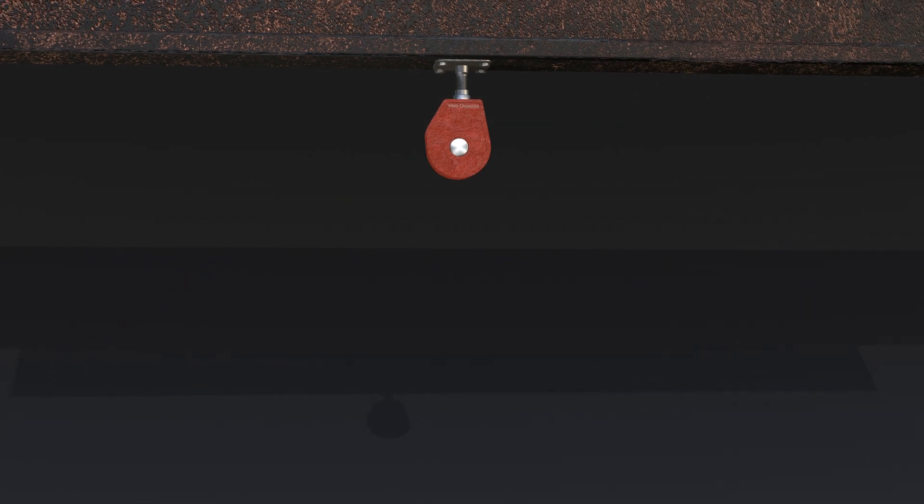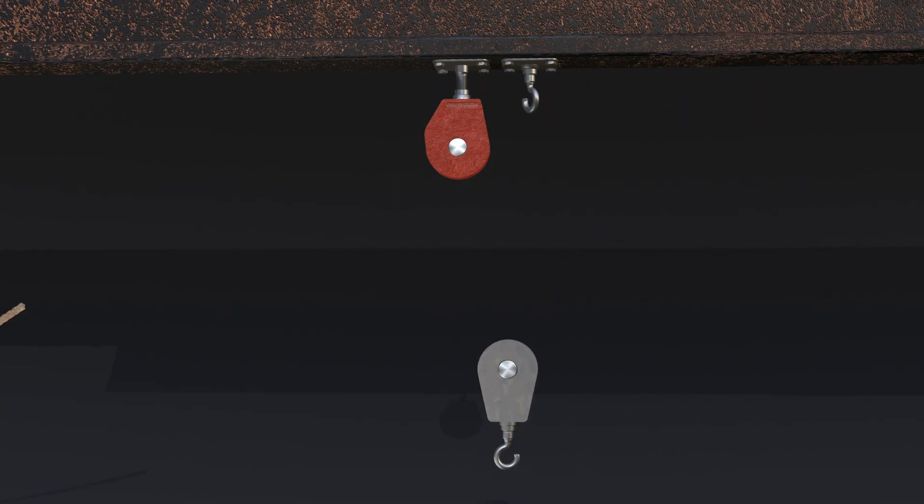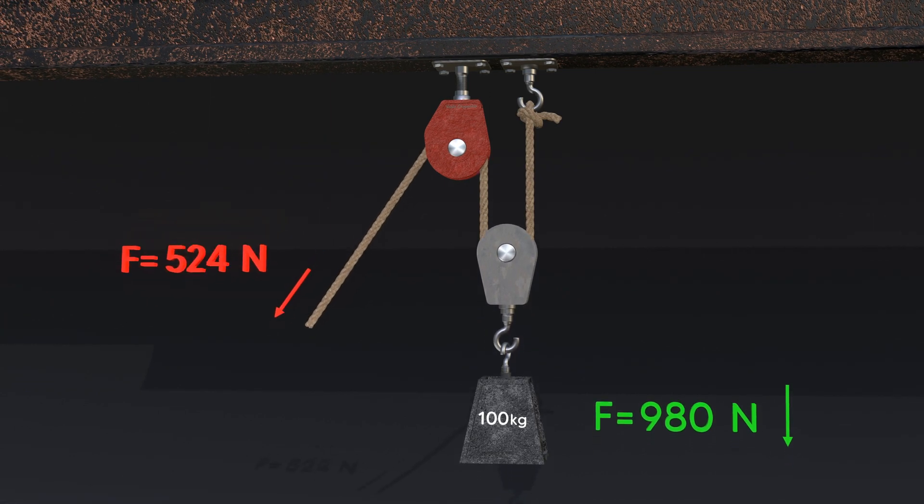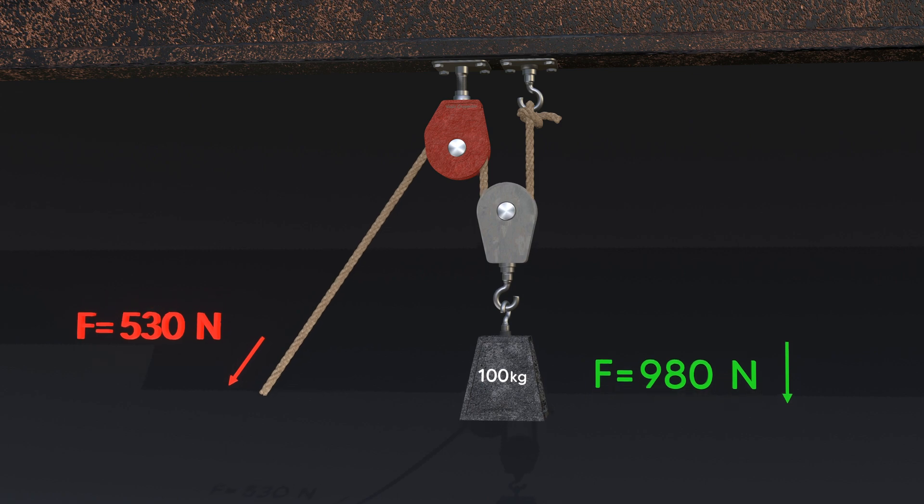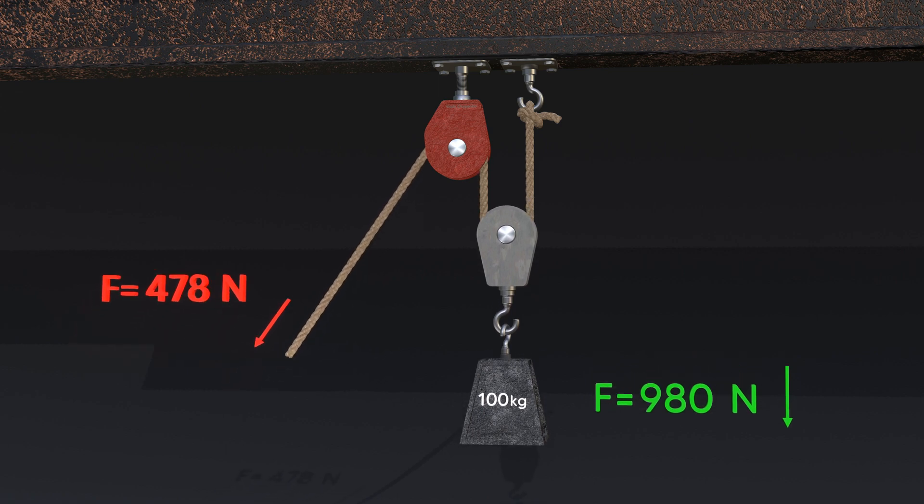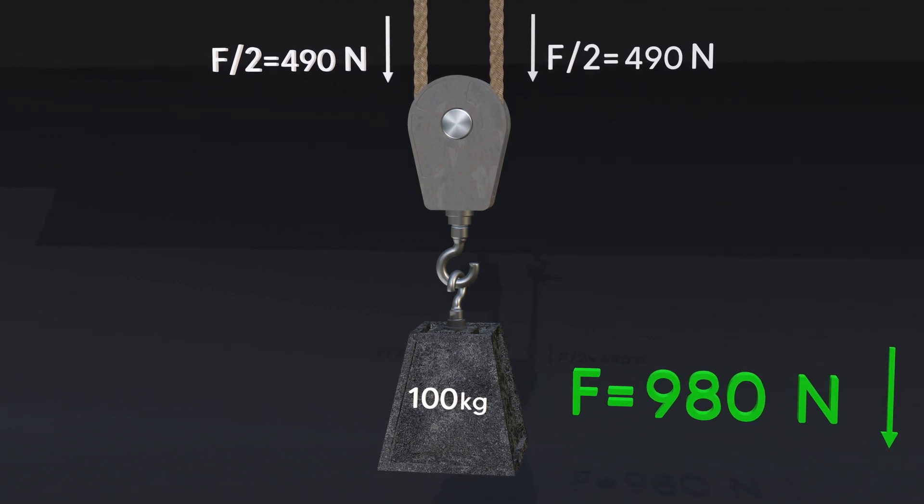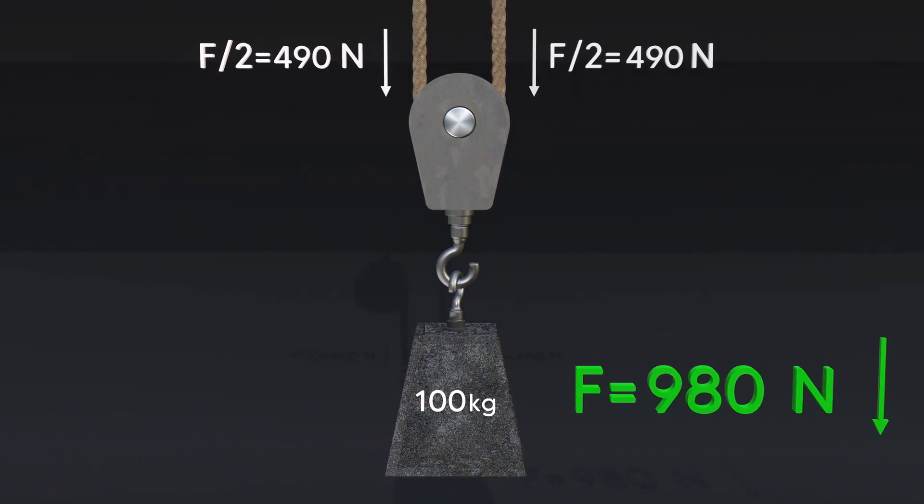But as soon as we add a hook and a moving pulley, a miracle will happen. If we neglect friction in the moment of inertia, then now we need to exert half as much effort to lift this weight. This happens because the weight of the load is evenly distributed between the two ropes.